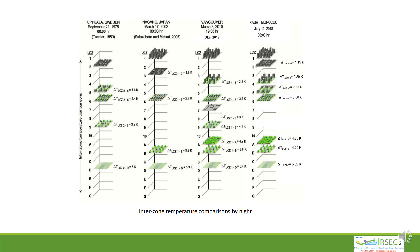This methodology is an example of using geographic information systems and numerical modeling as a tool to aid urban planners and designers in decision-making. The novelty of this approach also lies in the interconnection of two urban scales — the local scale and the microclimate scale — and in characterizing and quantifying the intensity of the urban heat island for the first time in a city of Morocco.